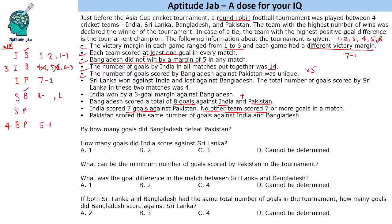The winning margin for India vs Pakistan is 6. The Sri Lanka vs India winning margin will be either 1 or 2. Since Bangladesh did not win by a margin of 5, the Sri Lanka vs Bangladesh match cannot end with a 5-goal margin, meaning the Sri Lanka vs Pakistan match must have a 5-goal margin. The only valid scoreline for that margin is 6-1, since only India scored 7 goals. However, we don't know if it's Sri Lanka winning 6-1 or Pakistan winning 6-1, as no specific information is given about this match.